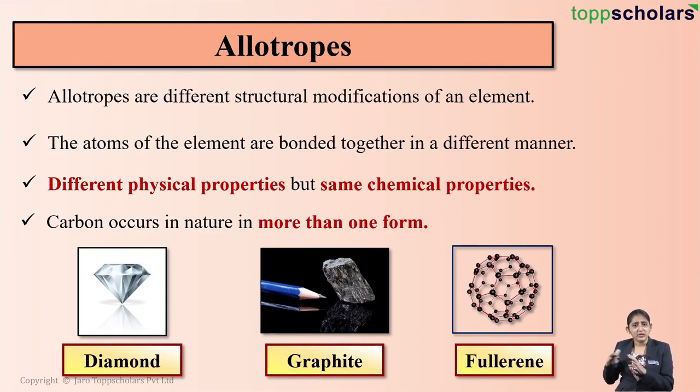As you can see, these three forms are the different allotropes of carbon. And these three different forms of carbon are the crystalline allotropes of carbon. Why crystalline allotropes? Yes, because crystalline allotropes are allotropes wherein the atoms are arranged in a definite and regular manner.